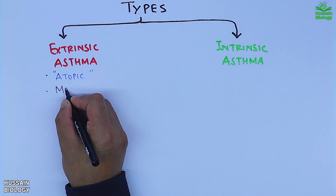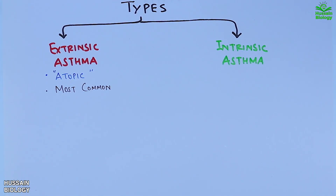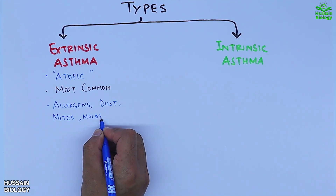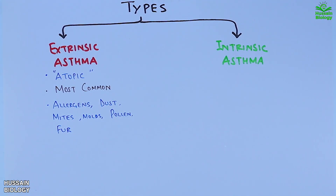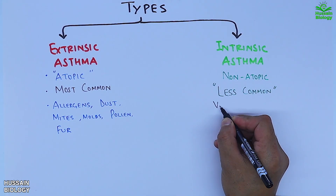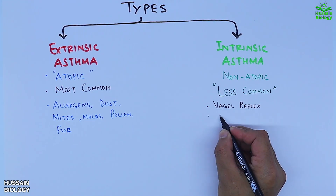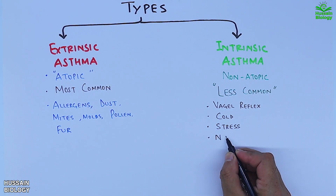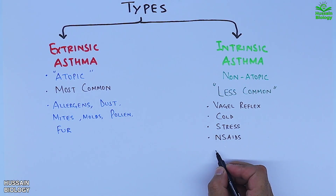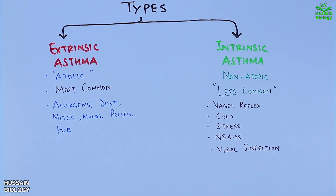Extrinsic atopic asthma is the most common type, triggered by allergens such as dust mites, molds, pollen, and fur. The intrinsic asthma is also termed non-atopic asthma and is less common. It is triggered by vagal reflex, cold, stress, NSAIDs (non-steroidal anti-inflammatory drugs), and viral infection.